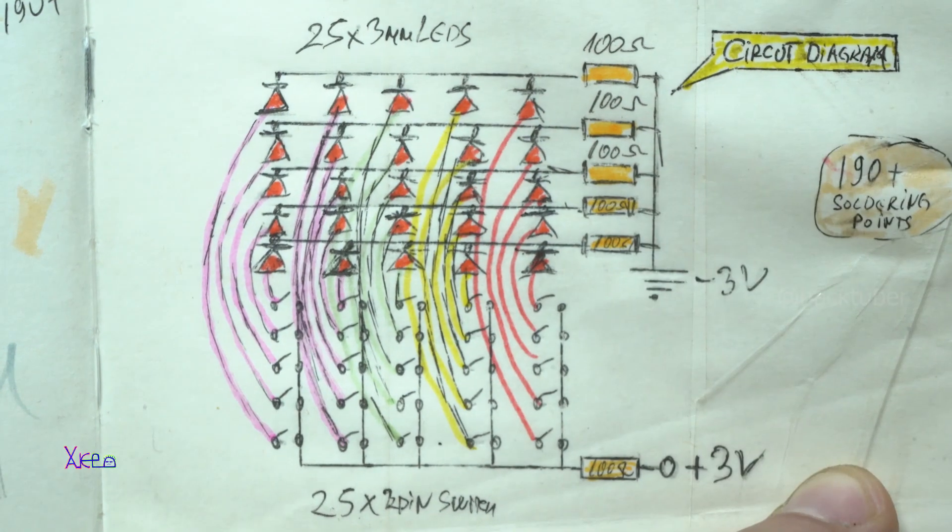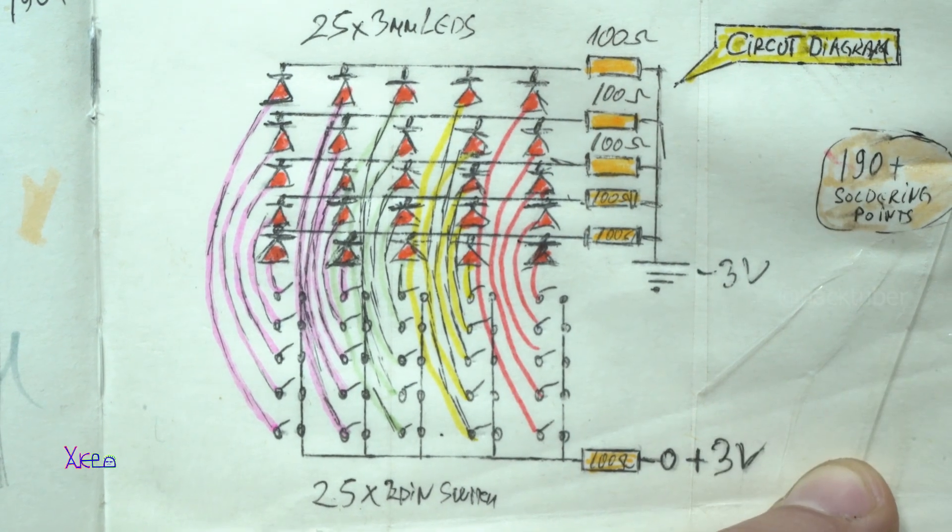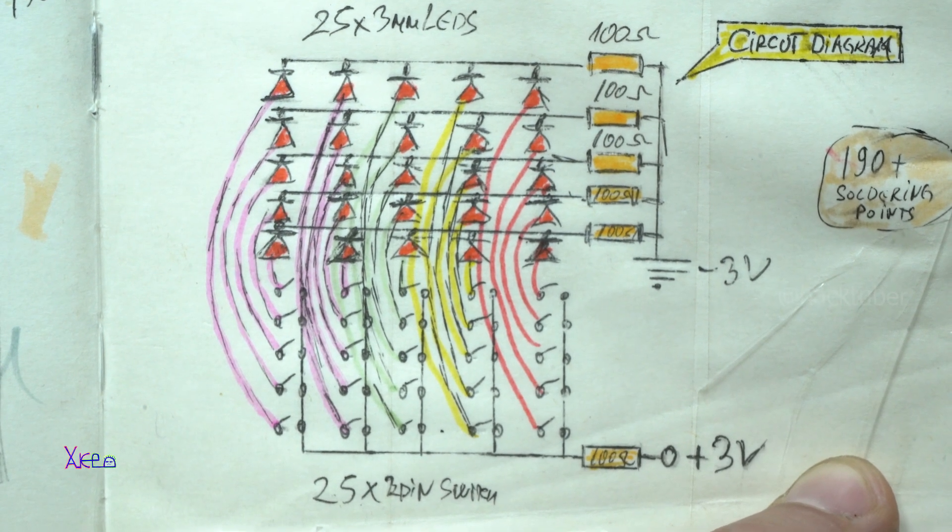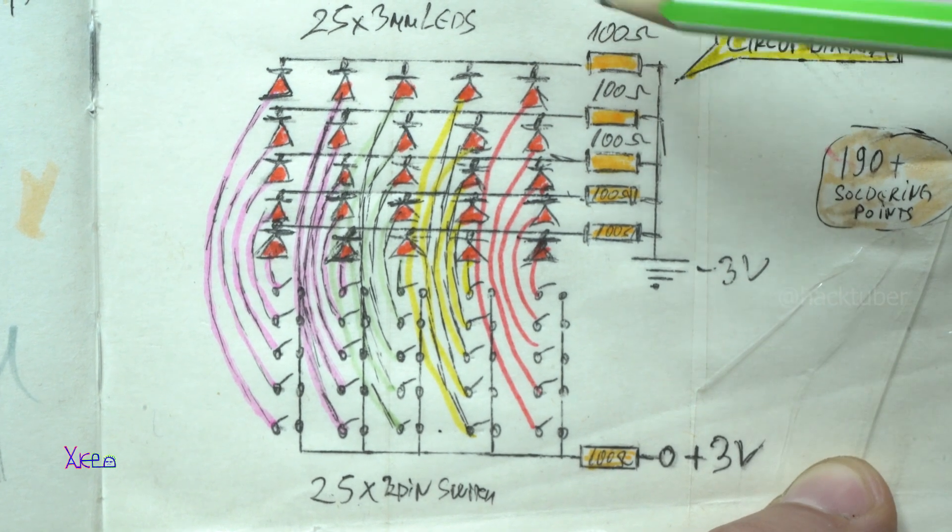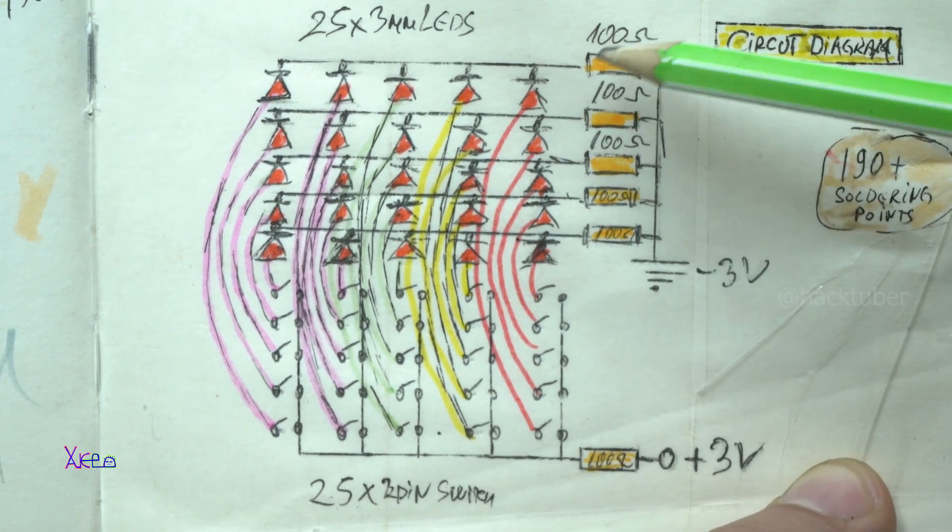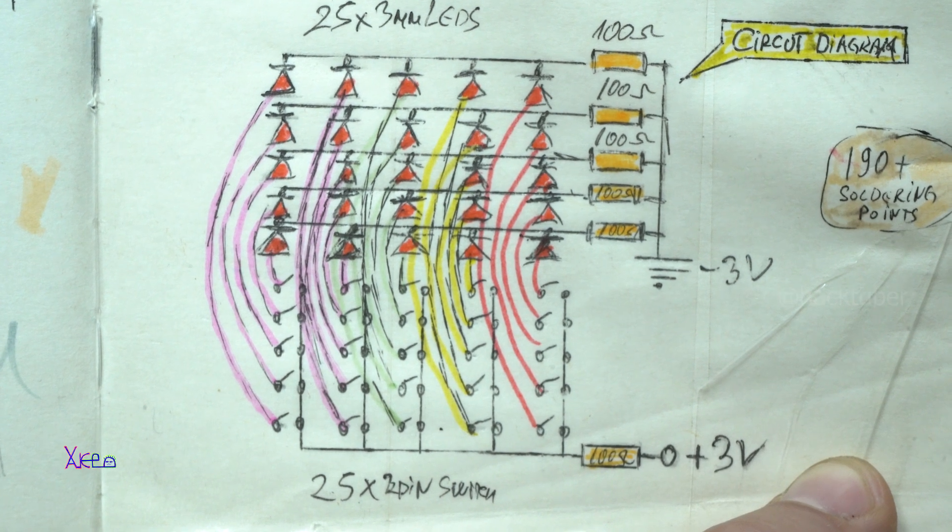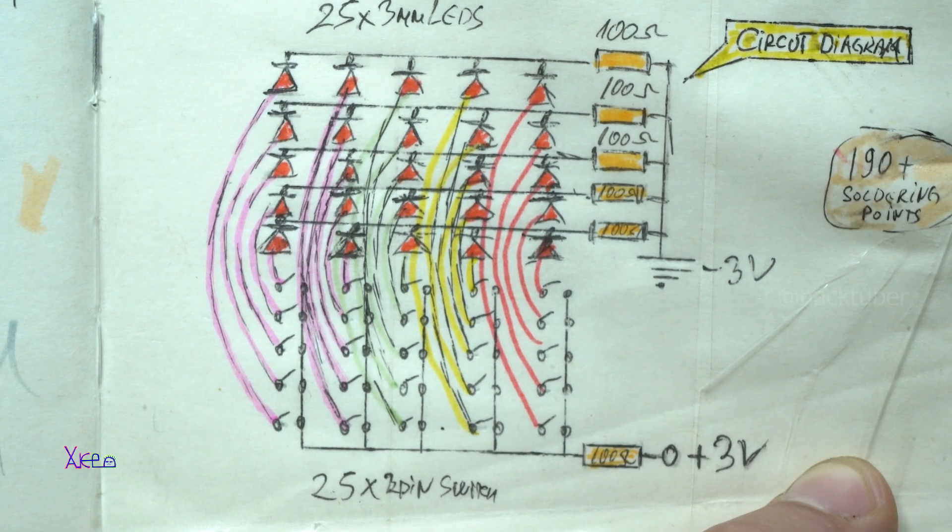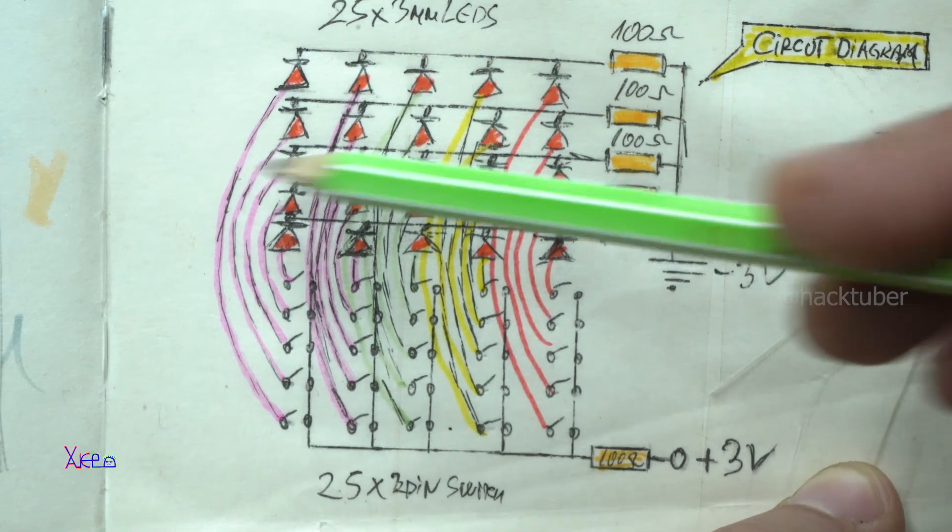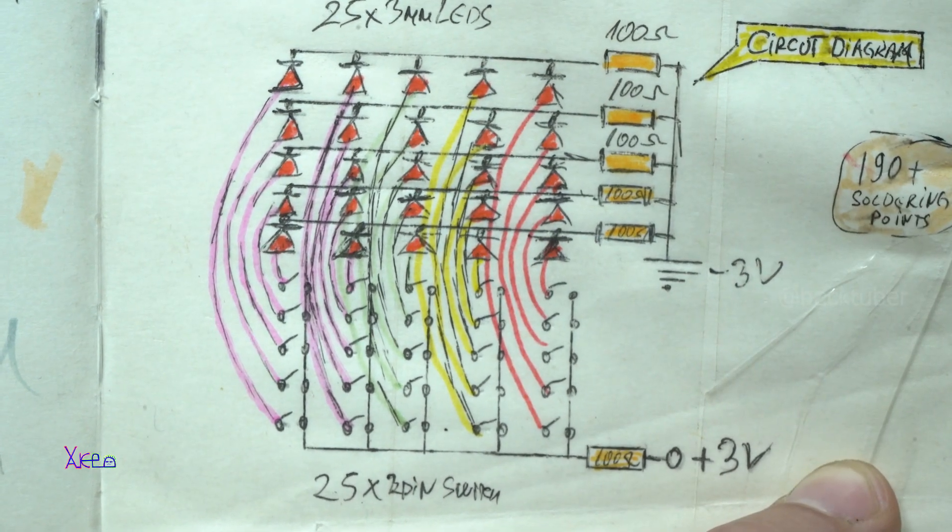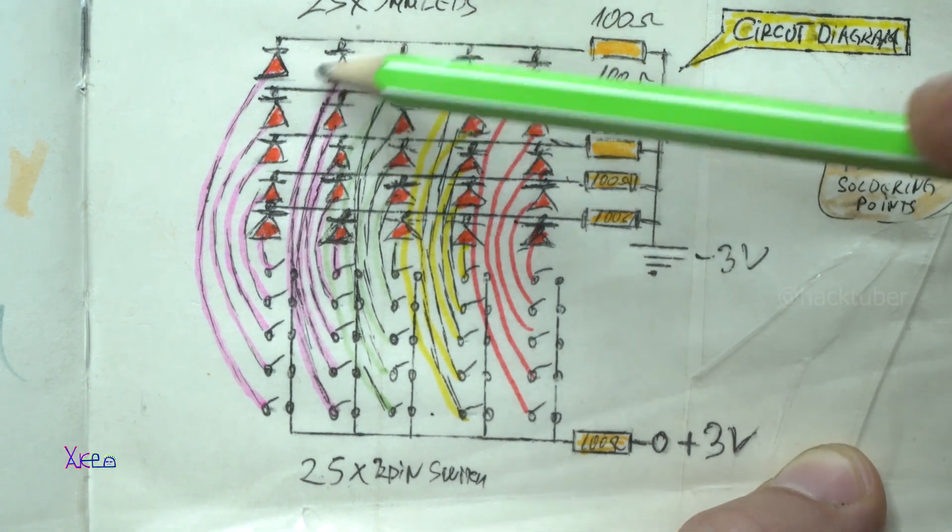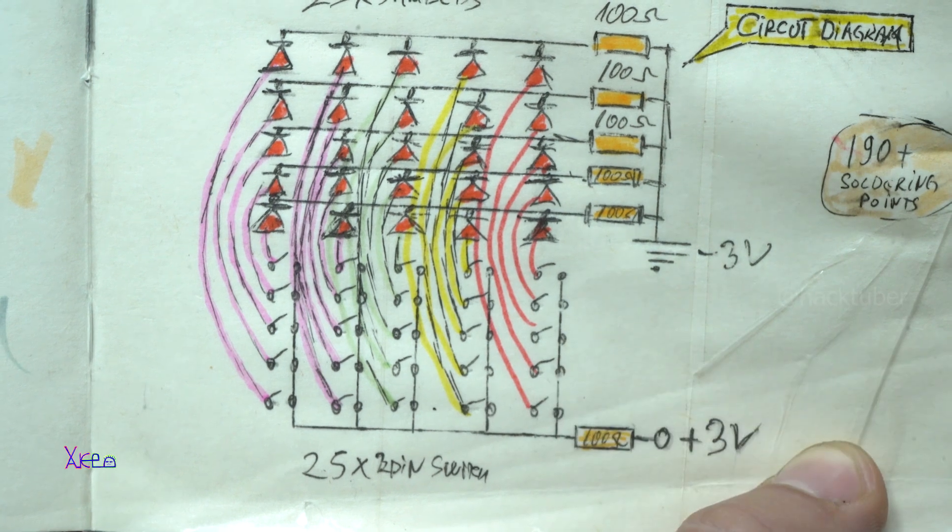Here I made a small circuit diagram for how to connect all the LEDs and switches. I am using 5 rows and for each row I add a 100 ohm resistor. I am not using a resistor for each LED, but I am using resistor for each row, each grounded row. So we have 25 LEDs that are controlled by 25 switches.